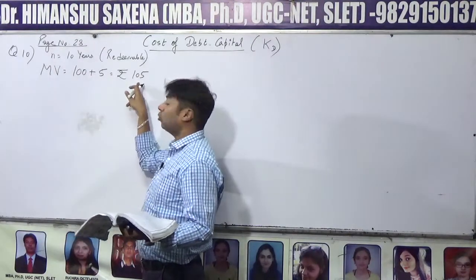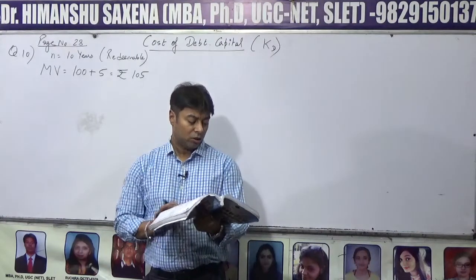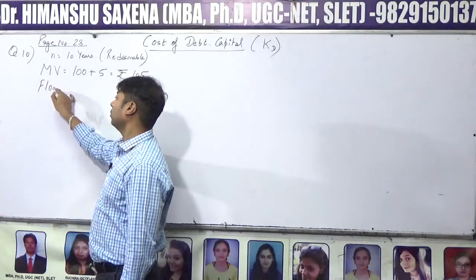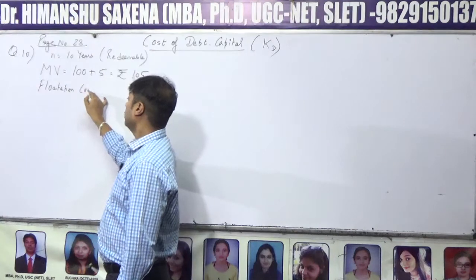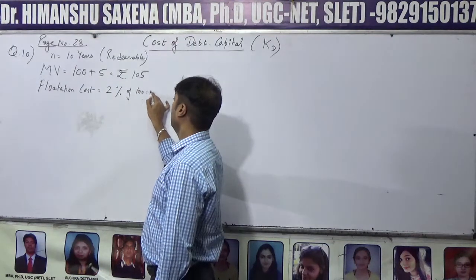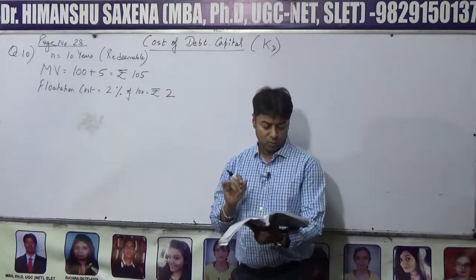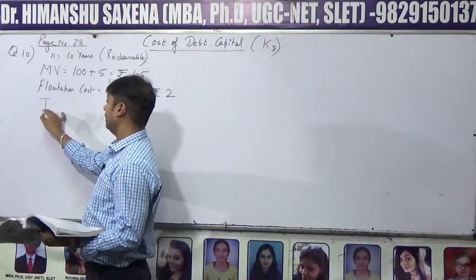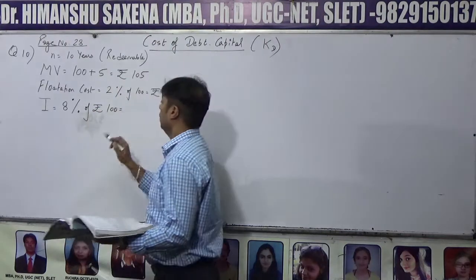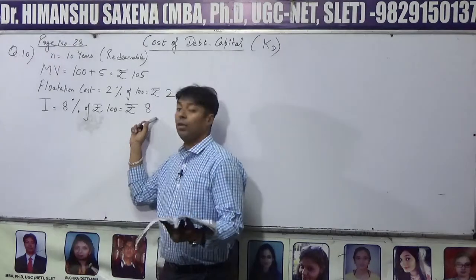Debentures को maturity पर ₹105 redeem यानी repay करेंगे। Cost of issue का मतलब होता है flotation costs — यहाँ flotation cost 2% है, तो 2% of ₹100 = ₹2. Interest निकलेगा: 8% of ₹100 = ₹8 — यही interest debentures पर मिलेगा।